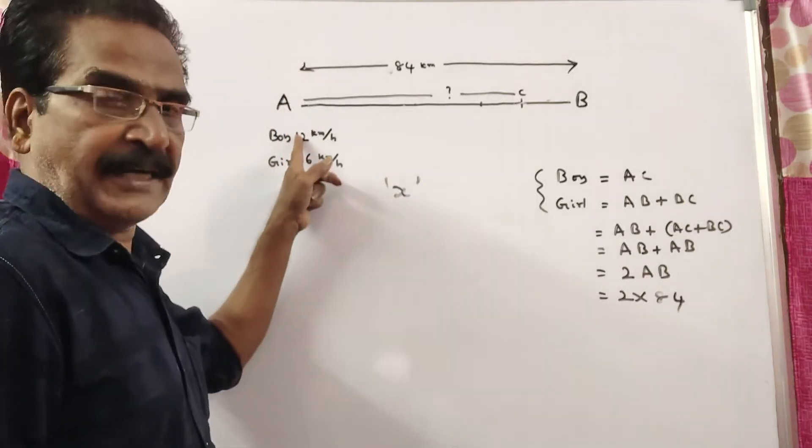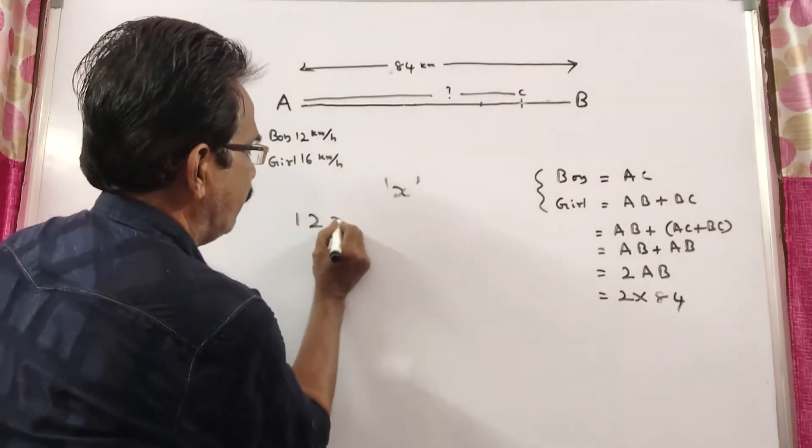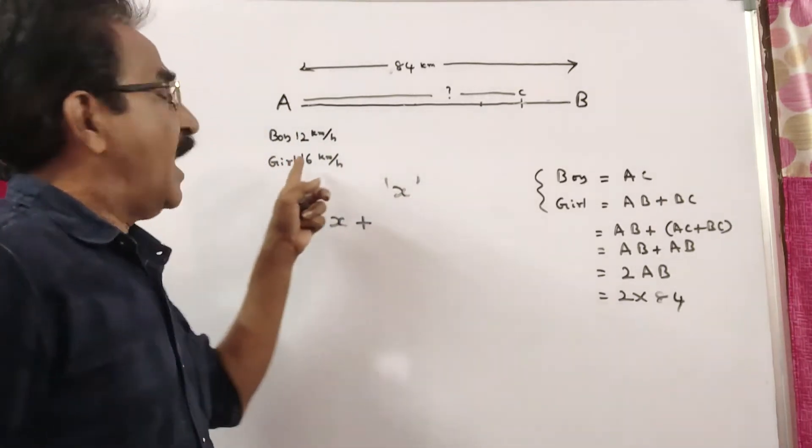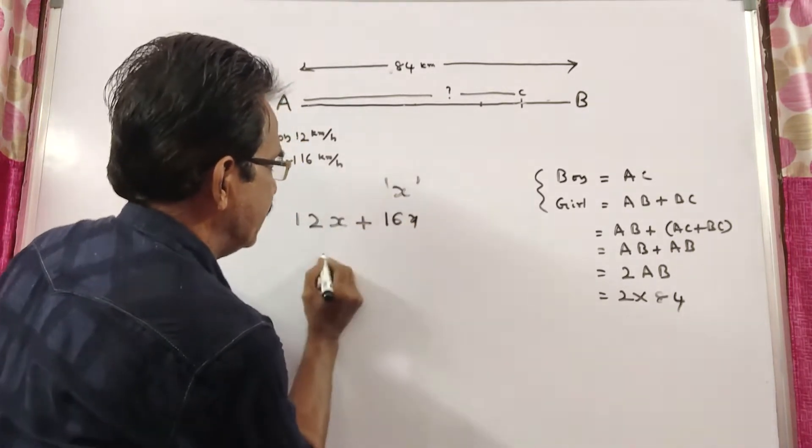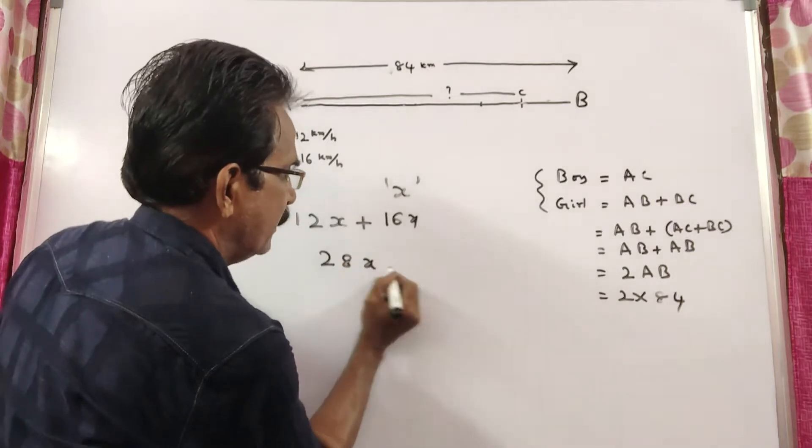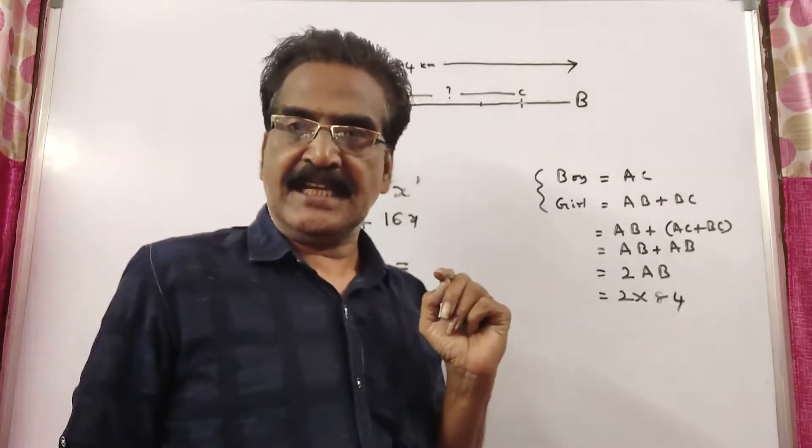The distance travelled by the boy is 12X and the distance travelled by the girl is 16X, total 28X.